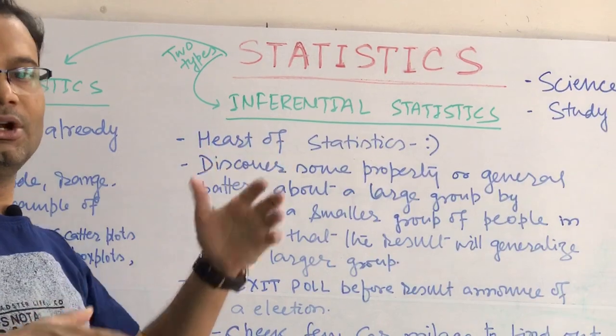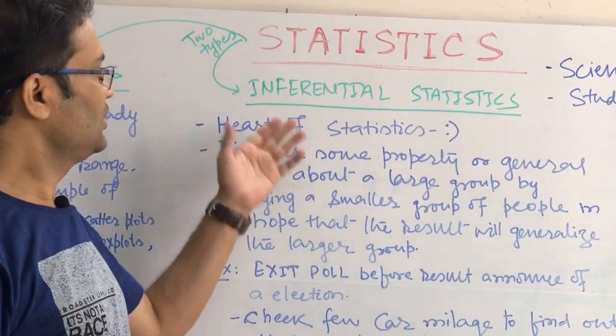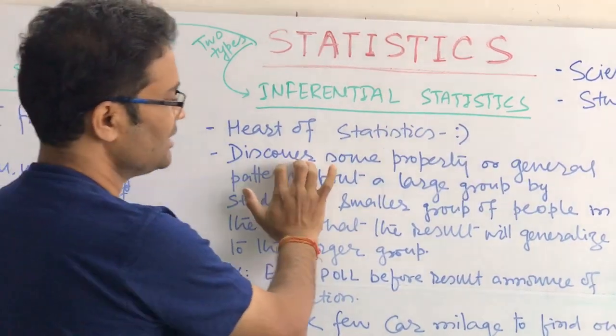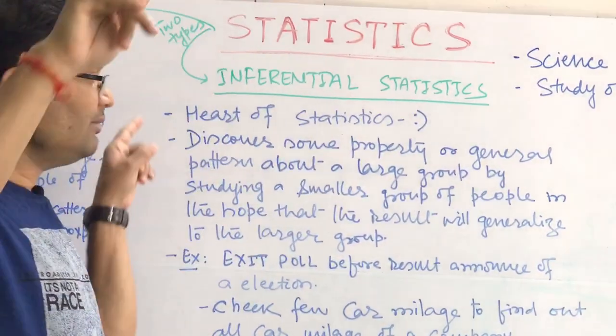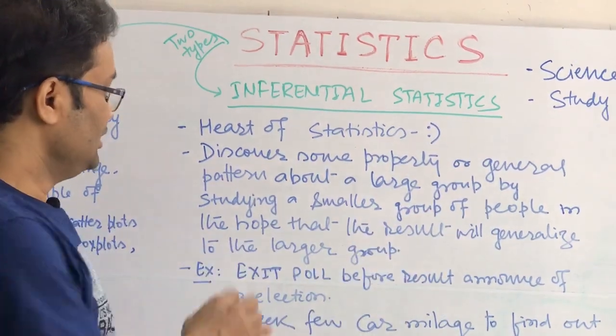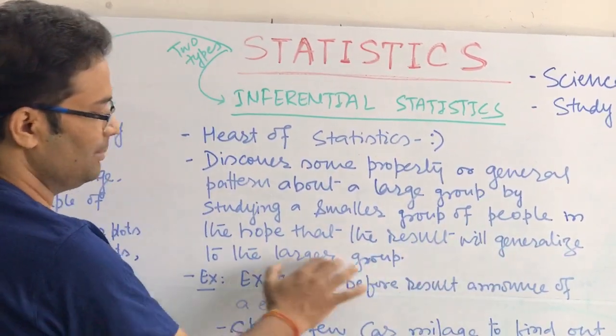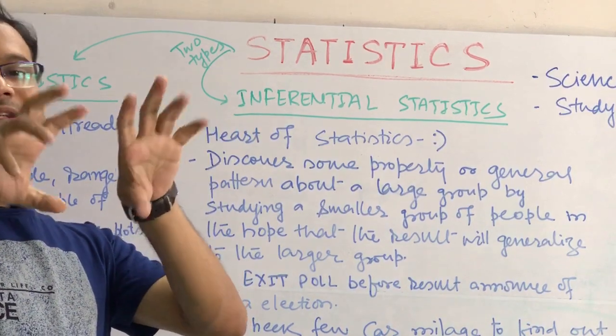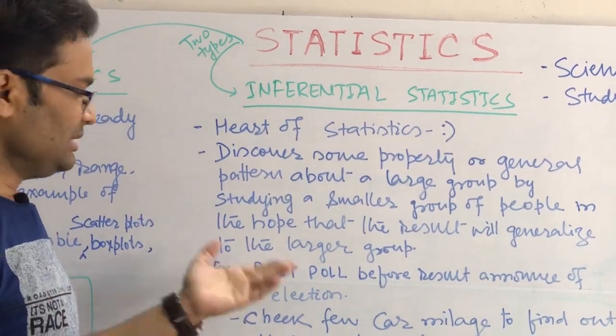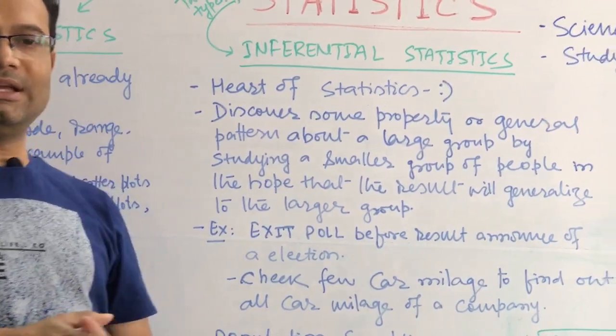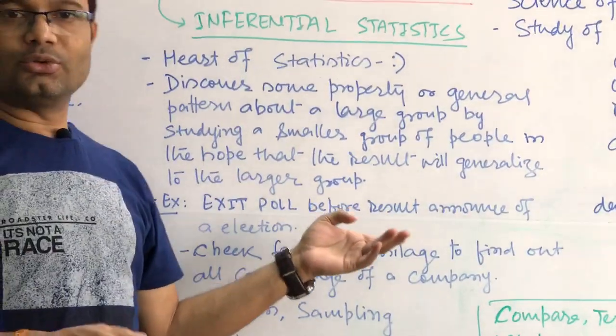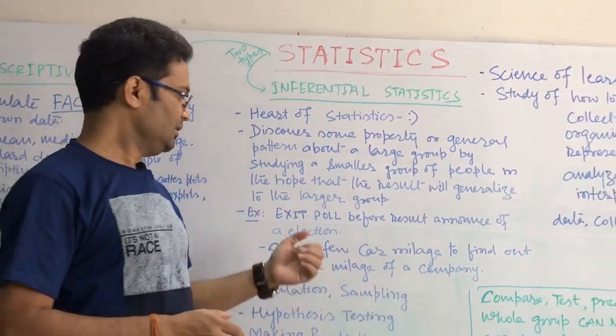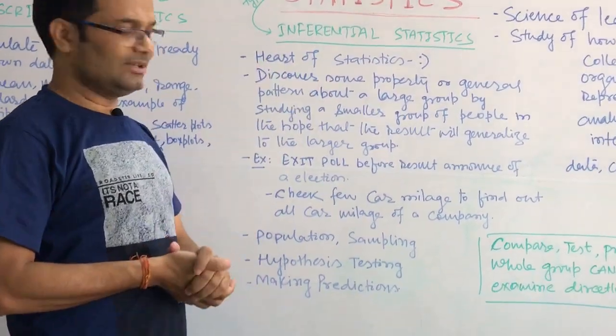What is inferential statistics? This is the heart of statistics. Most of things we will be doing down the line in inferential statistics. If you want to see the definition, this discovers some property or general pattern about a large group of people in the hope that result will be generalized to the larger group. We will take a small subset, take out some meaningful information, but generalized for the complete population. The best example, when the election is conducted in any country, we do have the exit poll. In exit poll not all the population participates, only the subset of the population participates, but we can show the exit poll due to the benefit of inferential statistics.